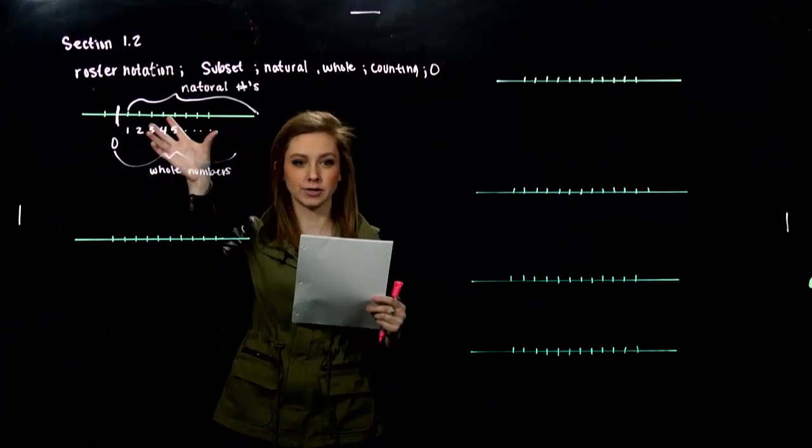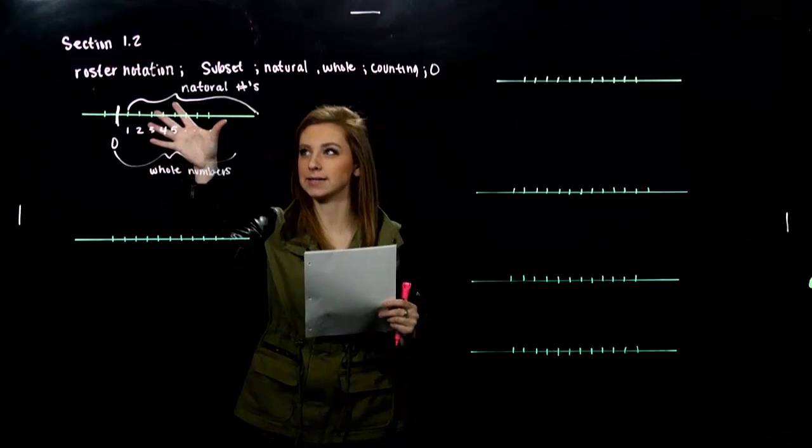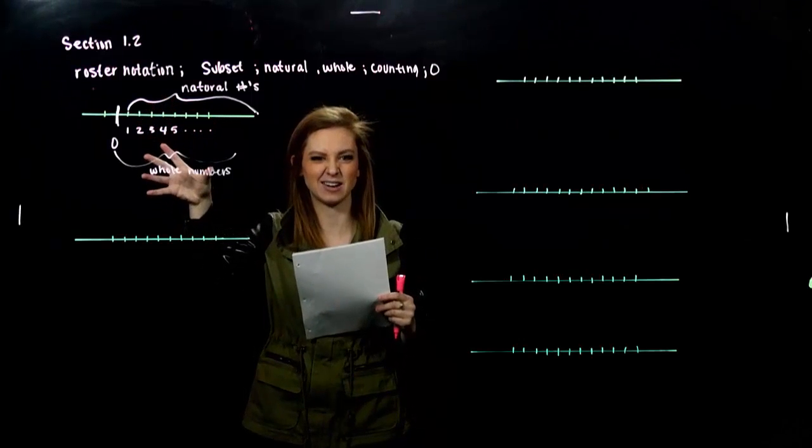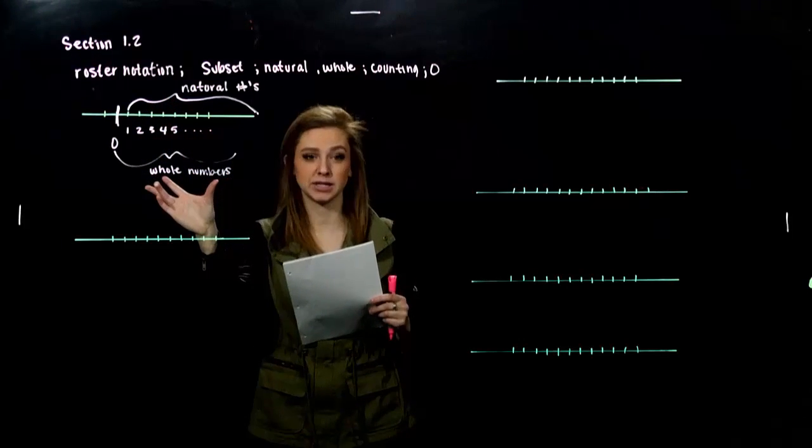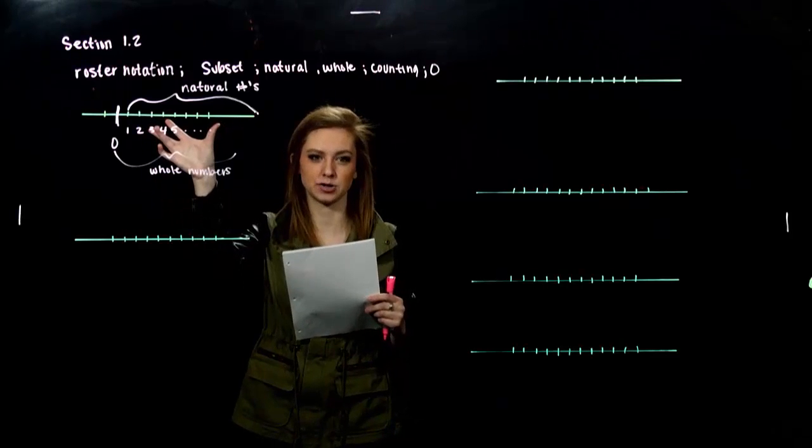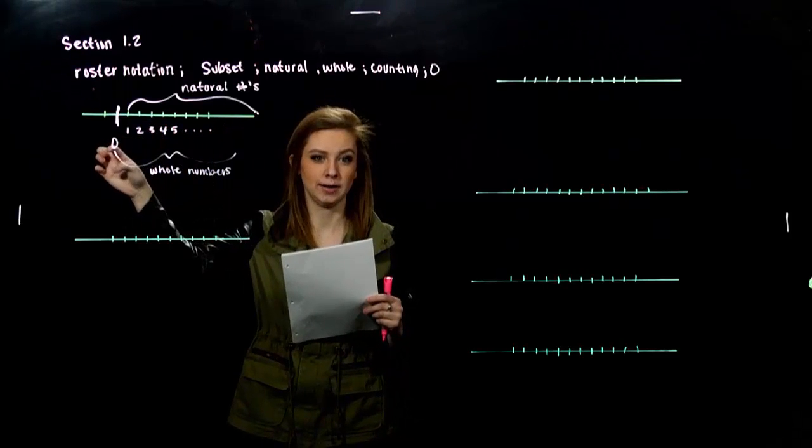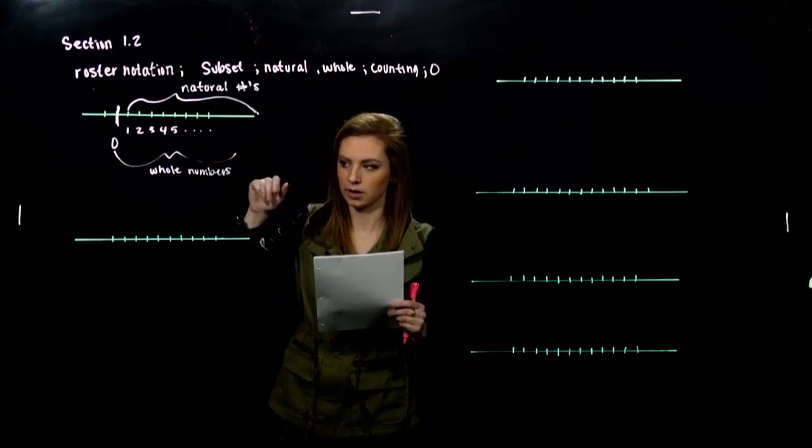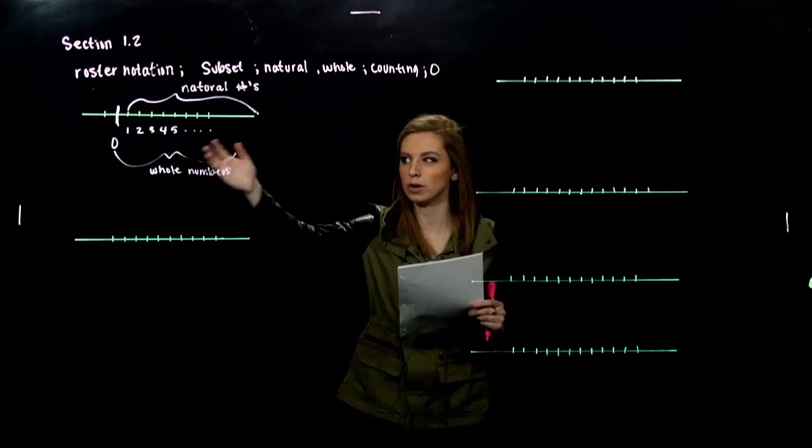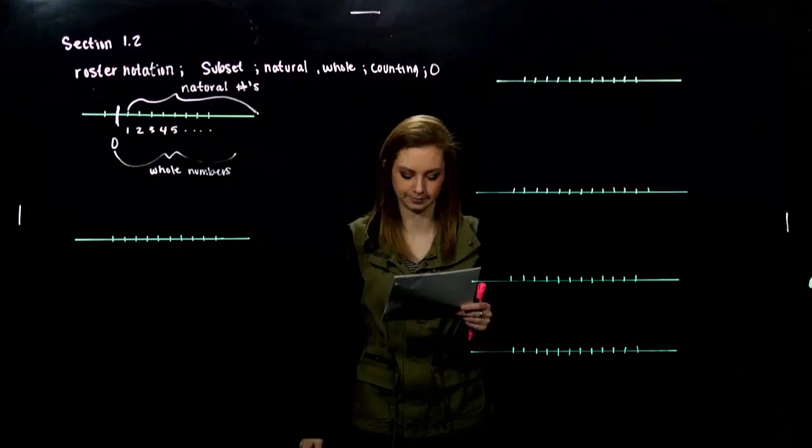All right. So, the naturals are a subset of the whole, because I can take the naturals and fit it inside of the whole numbers. But I couldn't take the whole numbers and put it inside of the naturals, because I'm larger by that one collection, that one element in my collection.